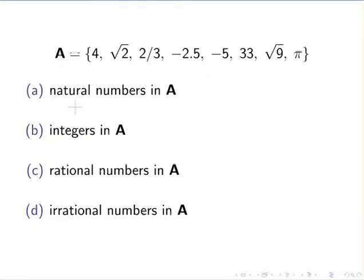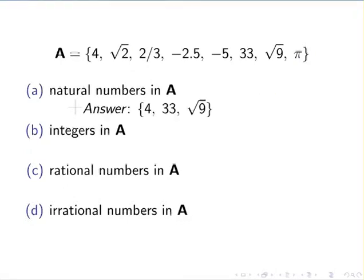Let's start with the natural numbers, which are positive integers. This is commonly denoted in blackboard font, but you might also see it written as Z with a plus superscript. The natural numbers here are 4, 33, and the square root of 9. Recall that the square root of 9 is actually equal to 3, so it can be classed as a natural number. The square root sign sort of hides that fact.